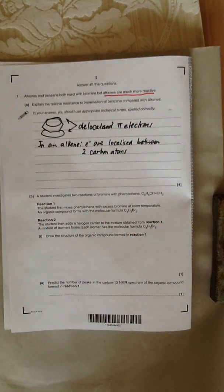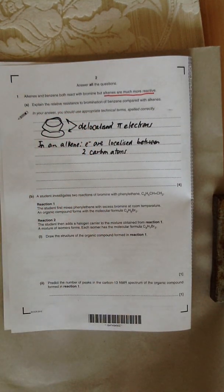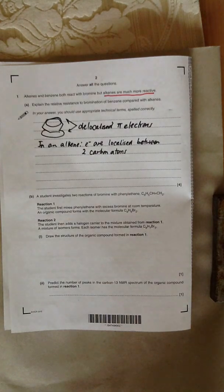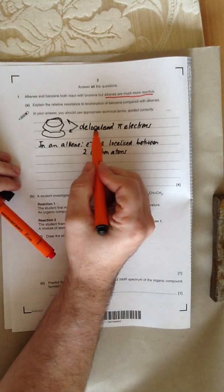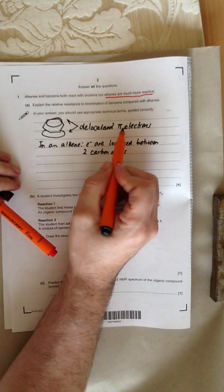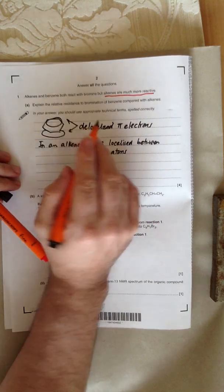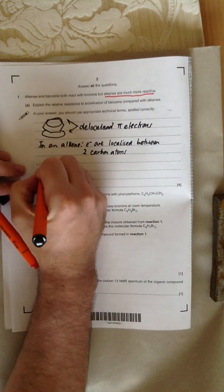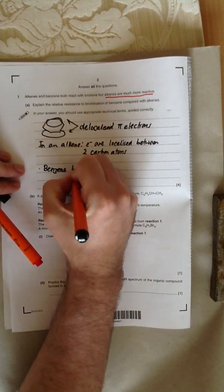The question is asking, explain the relative resistance to bromination of benzene compared with alkenes. Relative resistance means that benzene is less easily brominated than an alkene. The reason for this relies on the difference in the way the electrons are. In benzene, there are delocalized pi-electrons, and in alkene, the electrons are localized between two carbons.